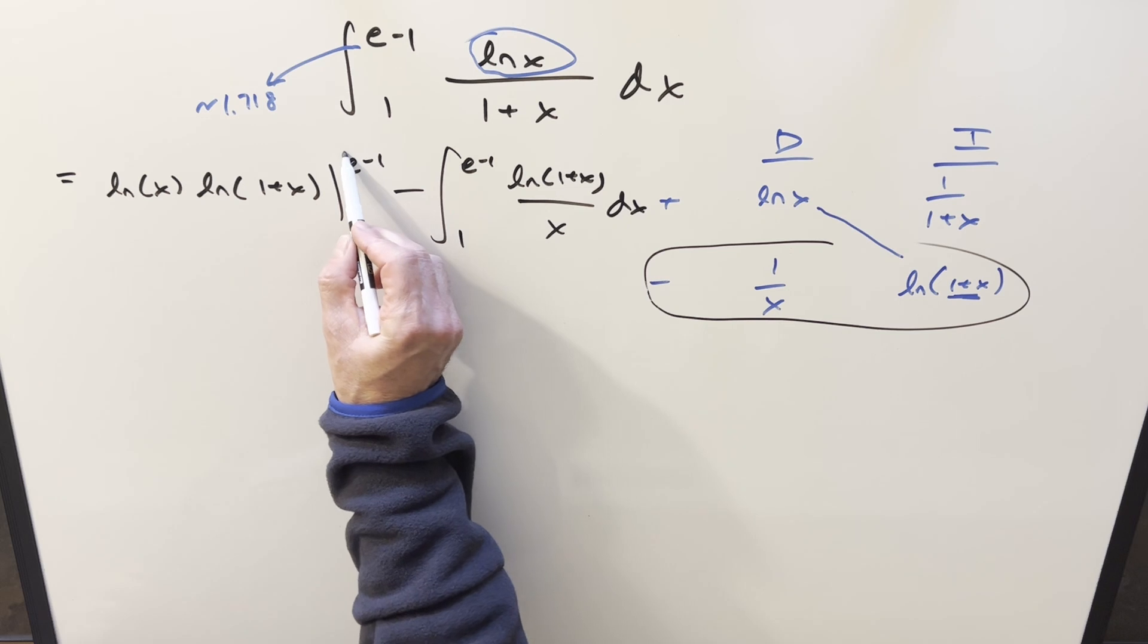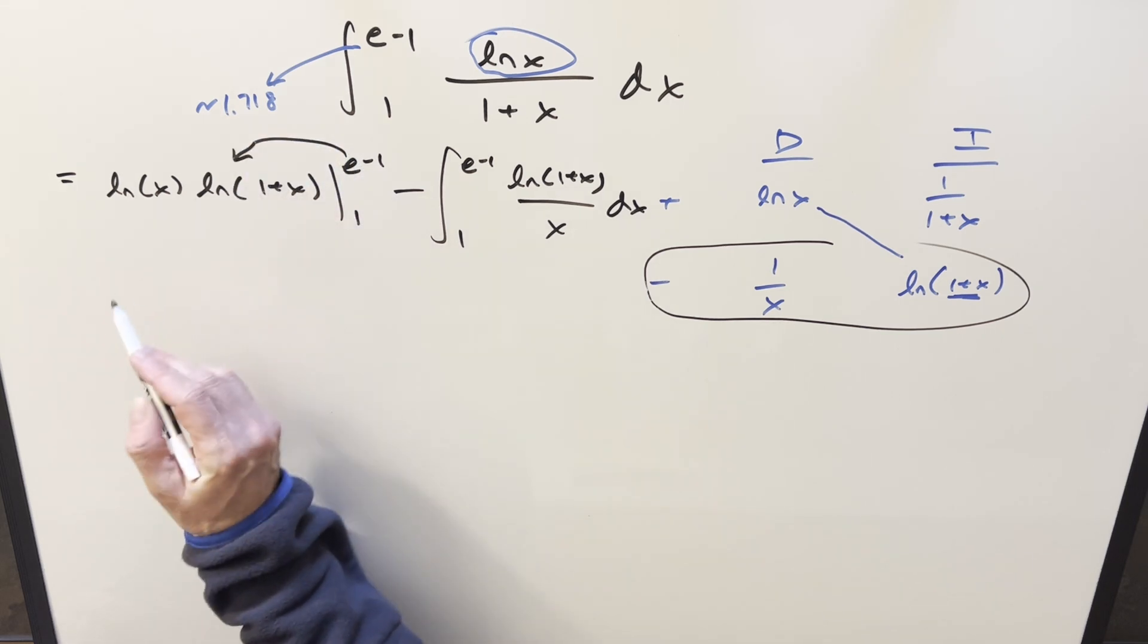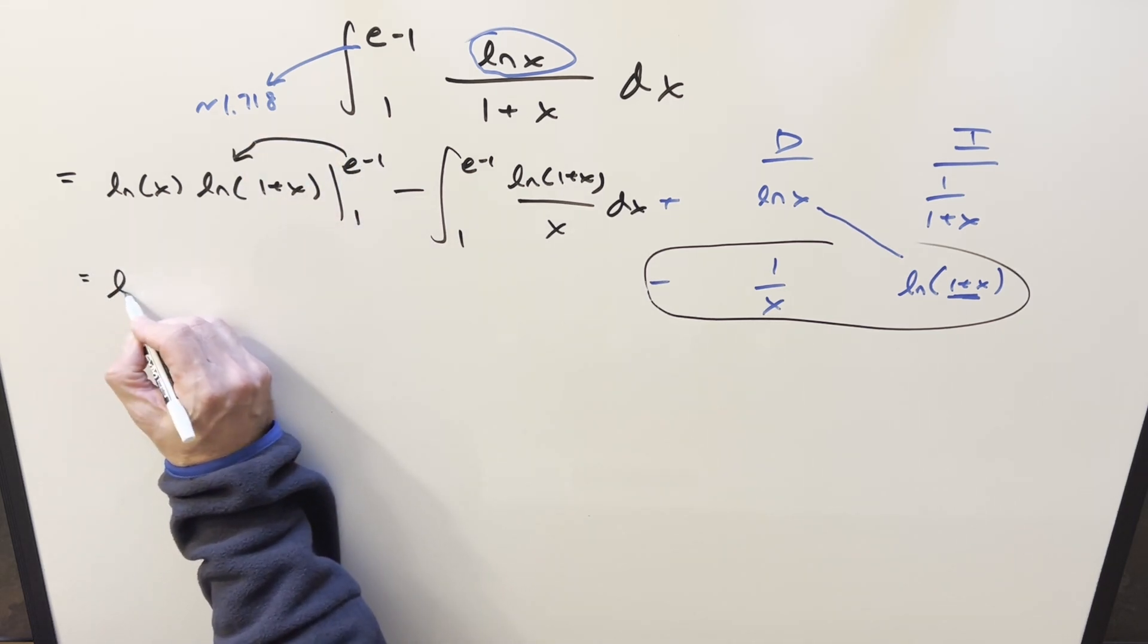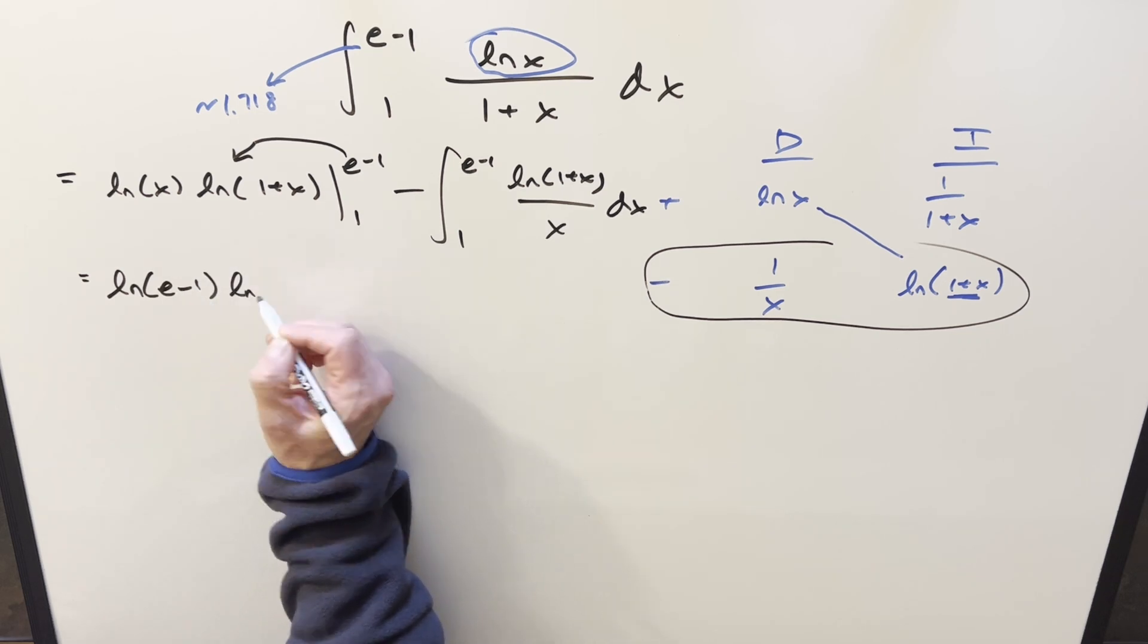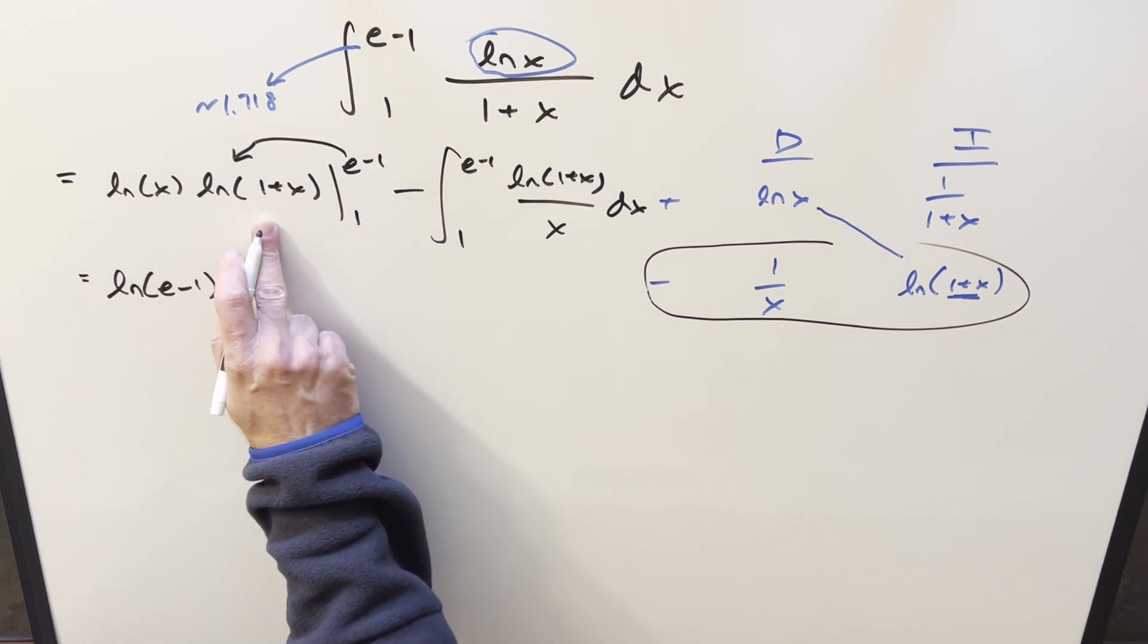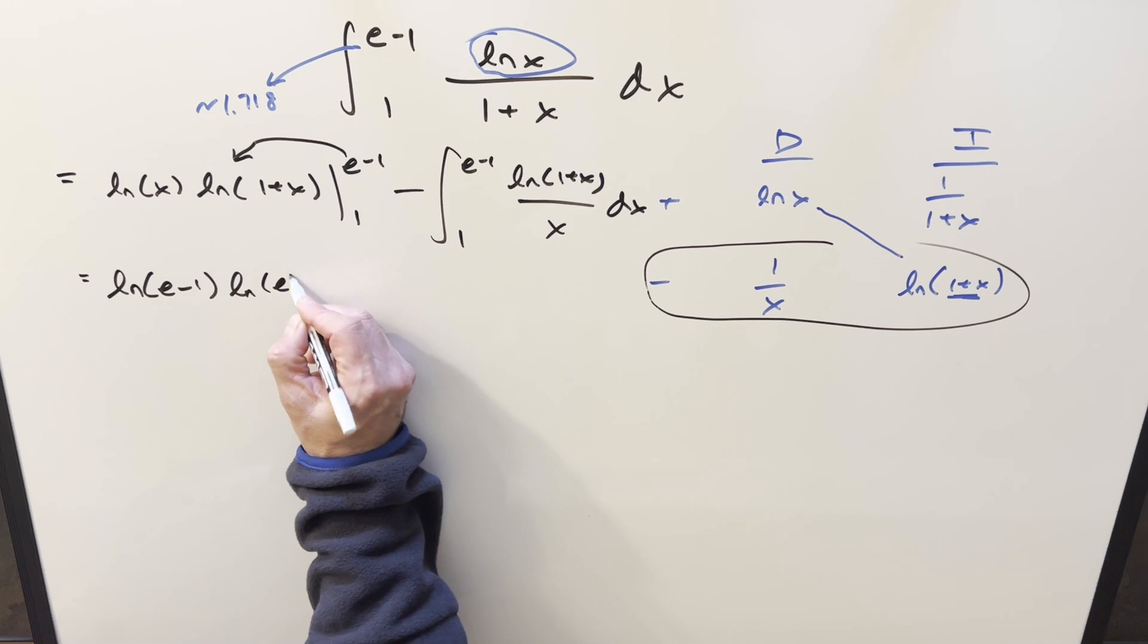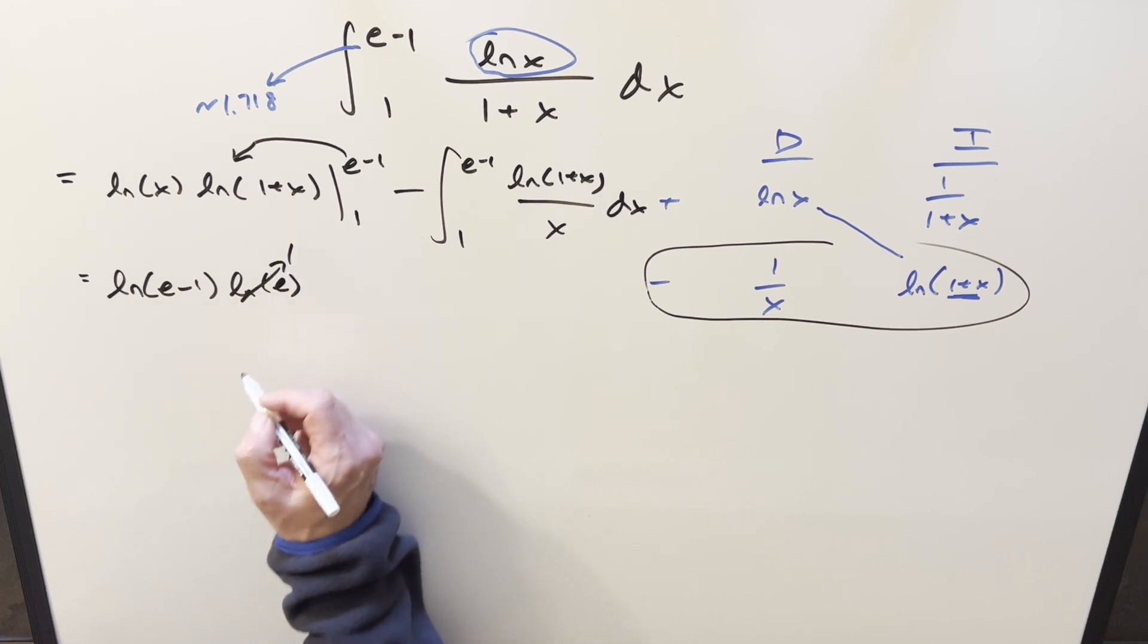So then we'll go ahead and evaluate it. First, plugging in e minus 1, we get natural log e minus 1 here. This one, the minus 1 and the plus 1 is going to cancel out. We're just left with ln e. That's pretty nice because that's just a 1.